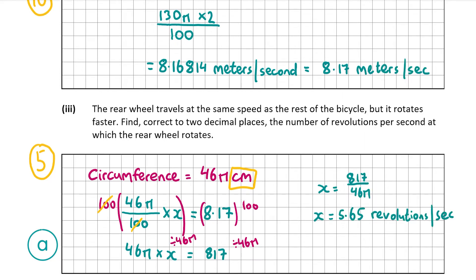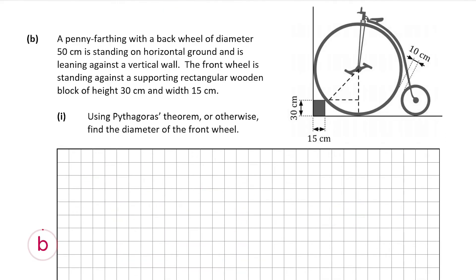That's our answer for part three. Now let's look at part B. Part B tells us there's a penny farthing with a back wheel of diameter 50 centimeters standing on horizontal ground and leaning against a vertical wall, with the front wheel standing against a supporting rectangular wooden block of height 30 centimeters and width 15 centimeters.